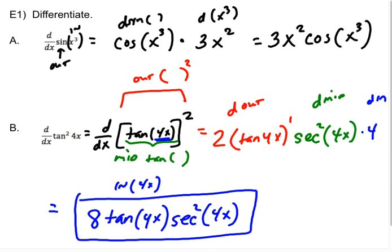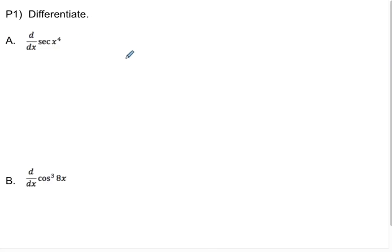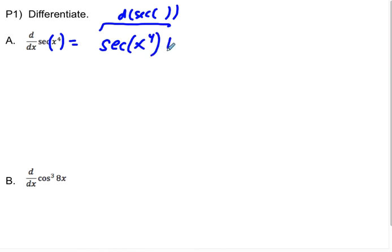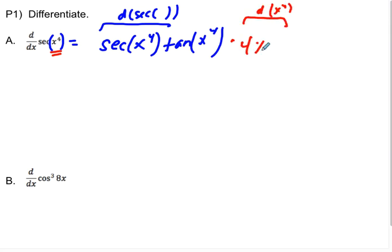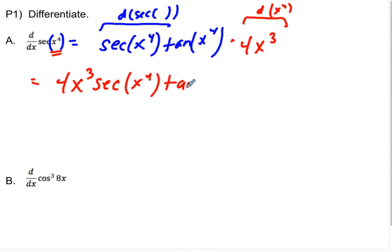For Practice 1 part a, secant of x to the fourth: the outside function is secant of stuff. The derivative of secant is secant times tangent of whatever the stuff is. Then I differentiate the inside, x to the fourth, giving 4x cubed. So the final answer is 4x cubed secant of x to the fourth tangent of x to the fourth.